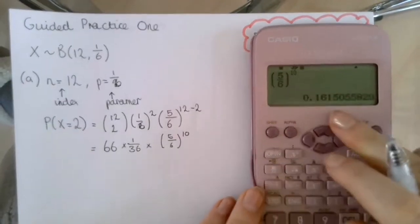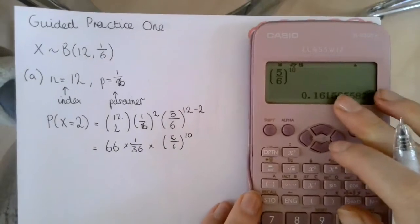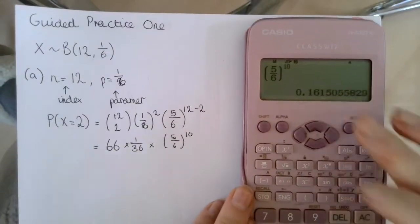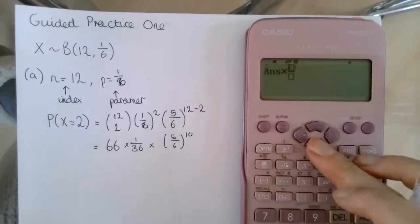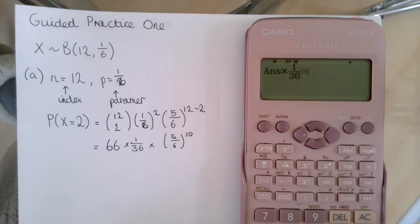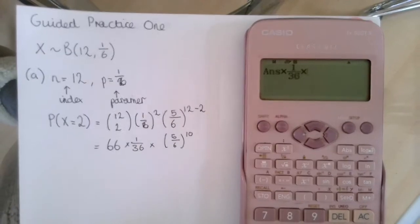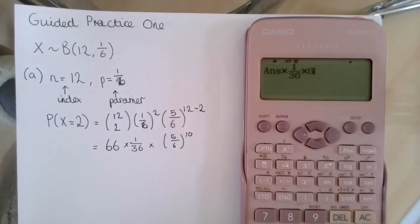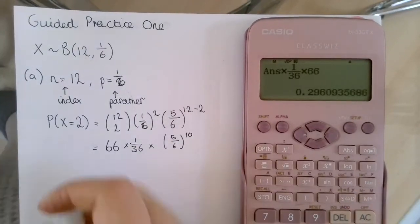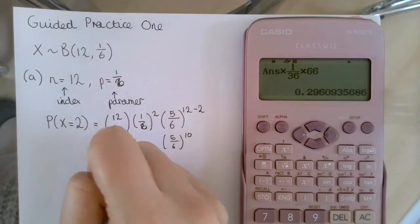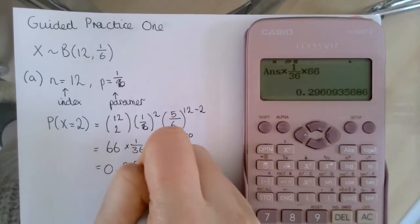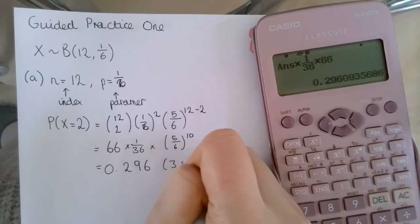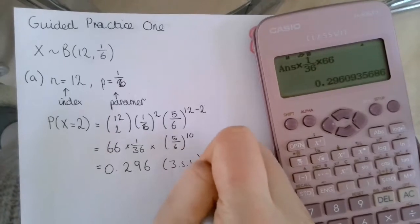I'm going to keep that answer in my calculator to maintain accuracy, multiplying by 1/36 and 66. My answer is 0.296 to 3 significant figures.